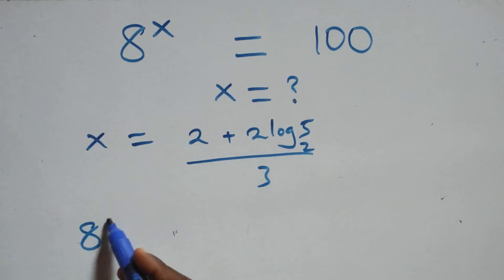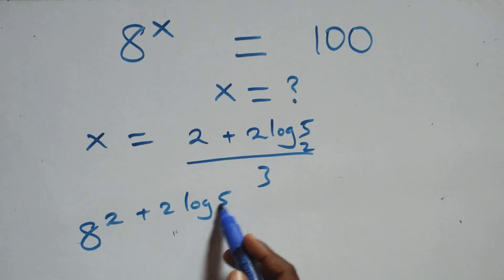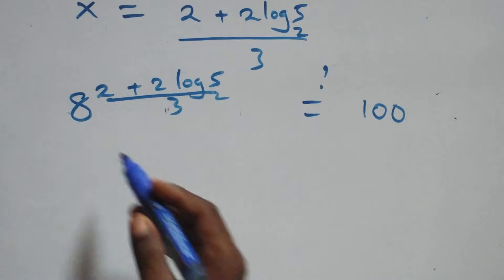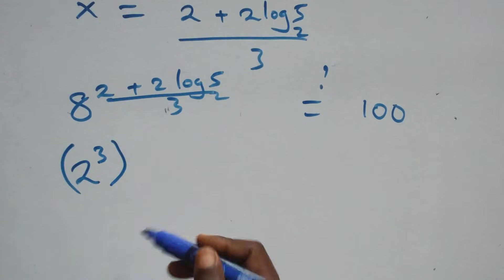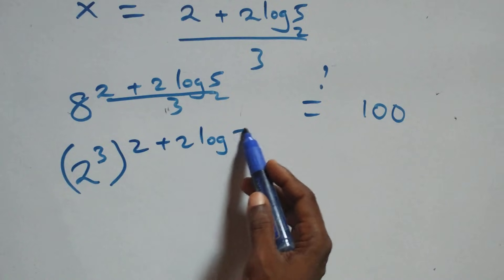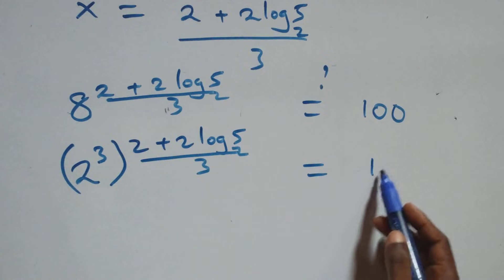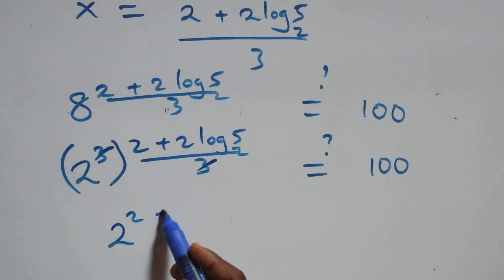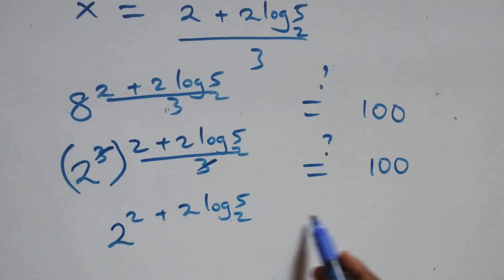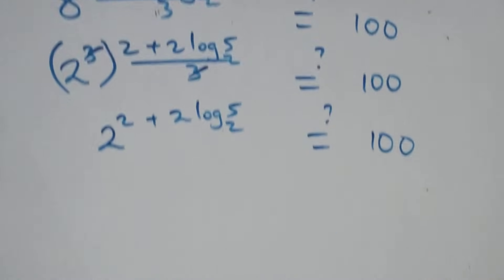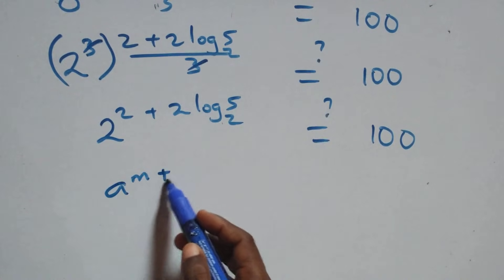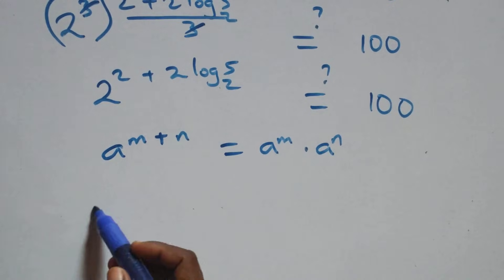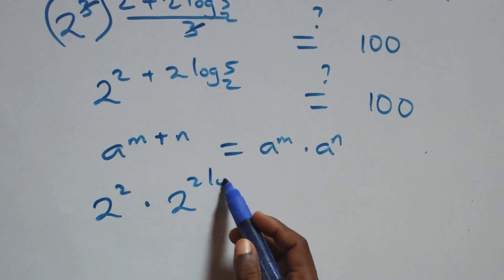Then what we have becomes 8 raised to the power x equals to 2 plus 2 log 5 base 2 all over 3. Is it equal to 100 on this side? From here we can write 8 as 2 raised to power 3, so it becomes 2 cubed raised to power 2 plus 2 log 5 base 2 all over 3, which equals 100. We apply the law of indices, and we get 2 raised to power 2 plus 2 log 5 base 2 equals 100.